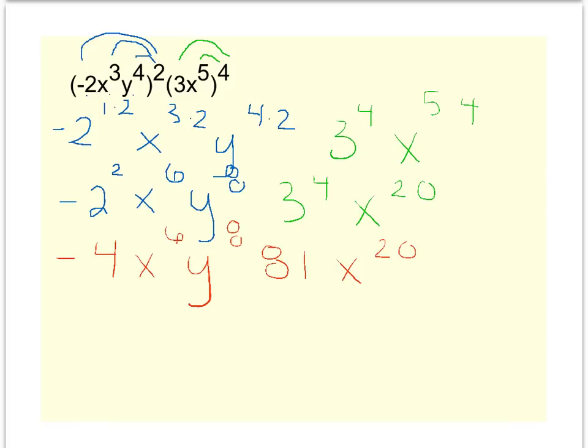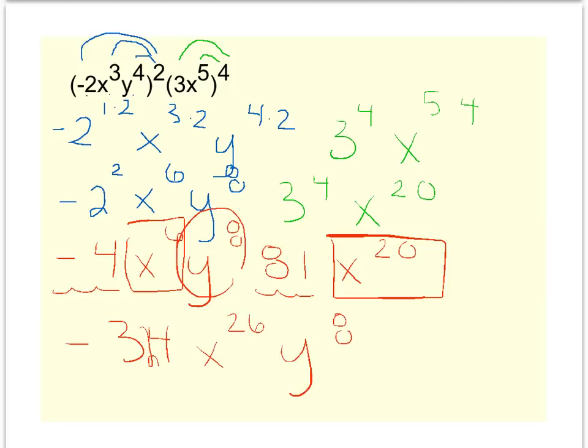Well, the like terms I have would be the negative 4 and the 81, which gives me a negative 324. And then let's see, I have an x to the 6th and an x to the 20th. So that will be x to the 26th, and then the y to the 8th is left over by itself.